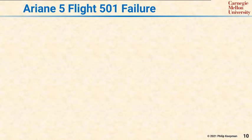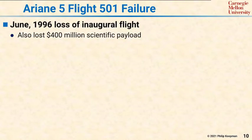The Ariane 5 is a heavy lift unmanned rocket that reused some components from the previous generation Ariane 4 model. The first launch of the new Ariane 5 design was in June 1996, and it had a $400 million payload that was supposed to go into orbit.